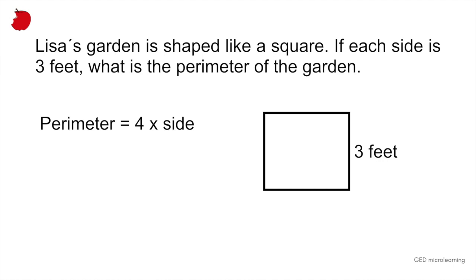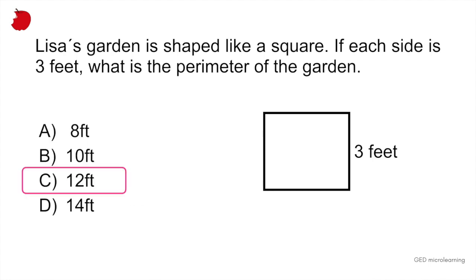And here they're giving us one side, 3 feet, and we said that all the sides are going to be equal because it's a square. So you just multiply 4 times 3, and that gives you 12 feet. So that's all there is to this question. Again, don't miss out on these easy points, and make sure that you do a few geometry problems. Make sure you understand how to apply the formulas. Your correct answer would be option C.